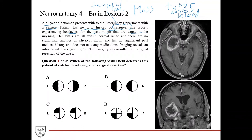The fact that headaches are worse in the morning can tip you off to increased intracranial pressure. When you wake up, you've been lying down all night, which increases blood flow to the head because there's less gravitational resistance. Additionally, when you're sleeping you don't ventilate as much, so you have a higher PCO2, which causes vasodilation and further increases blood flow. These two factors together contribute to increased intracranial pressure, which, if you have a mass, can cause headaches that are worse in the morning.